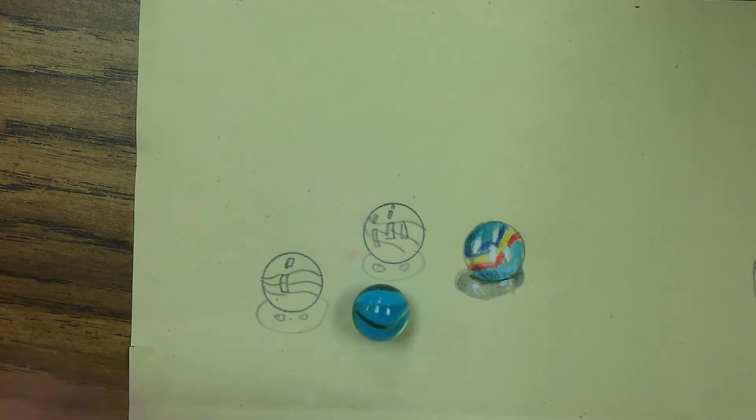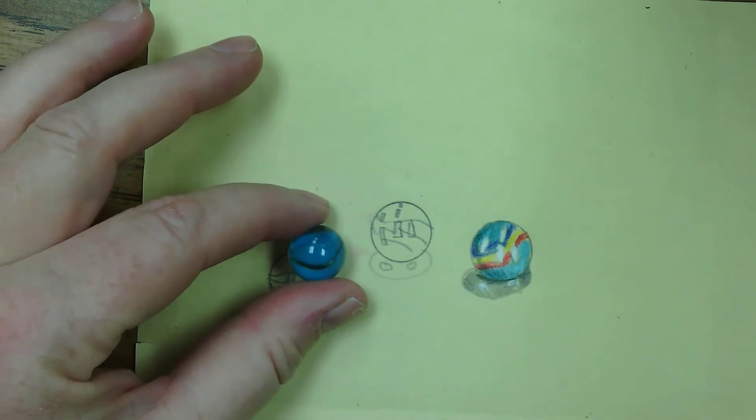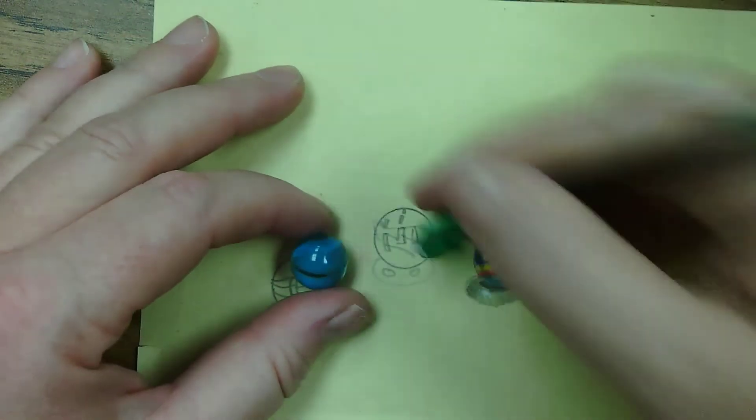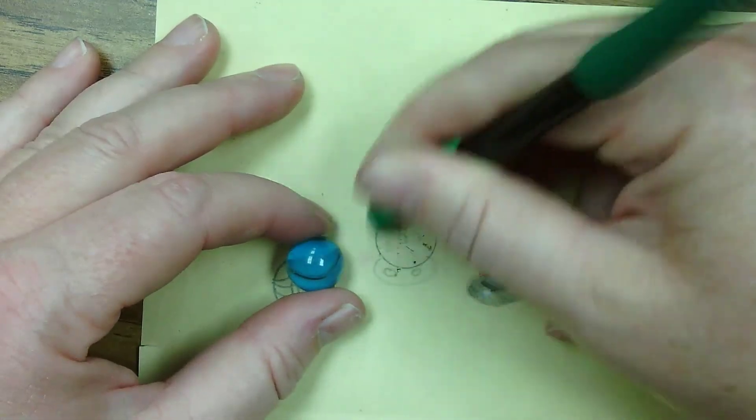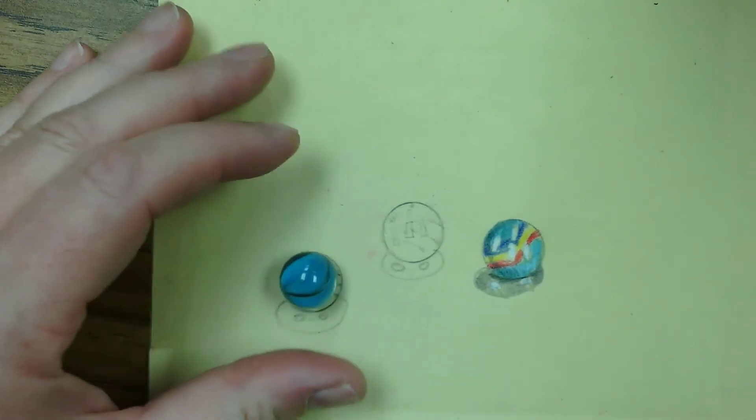The first thing we're going to do is lighten our pencil lines. Take your eraser and clean up your drawing because we don't want that graphite to mix in with our colors and muddy it up.